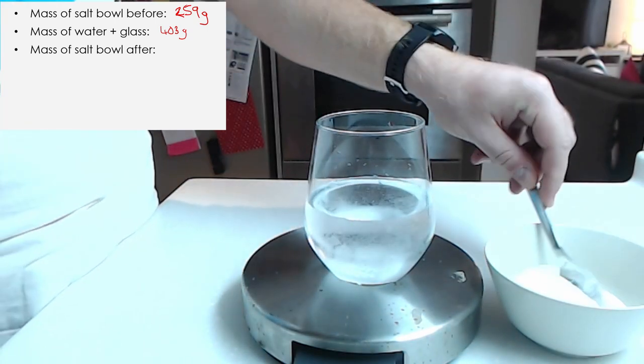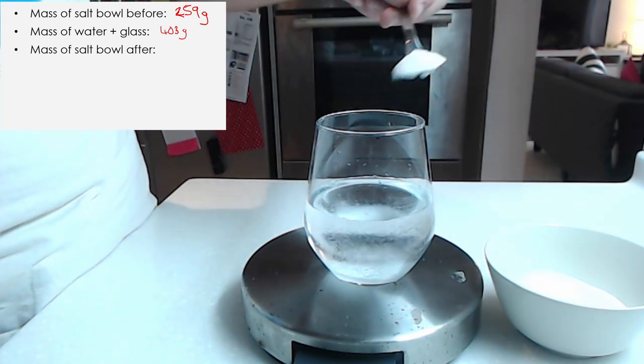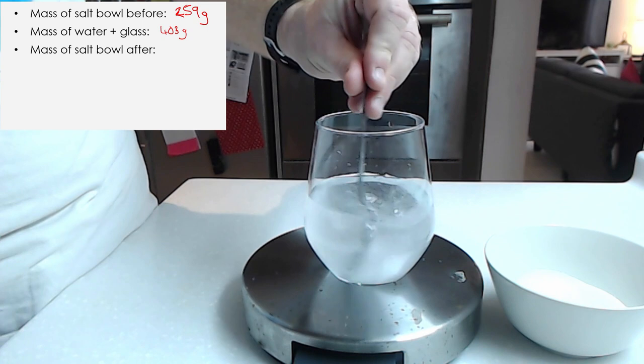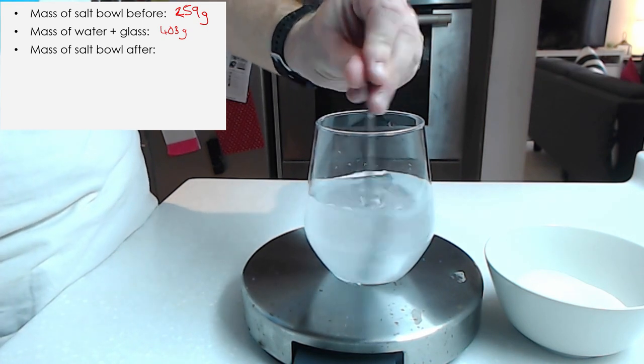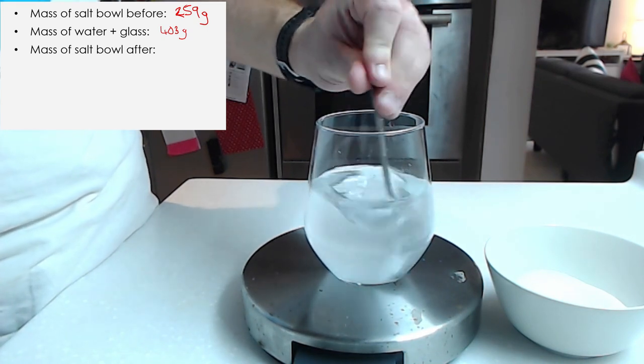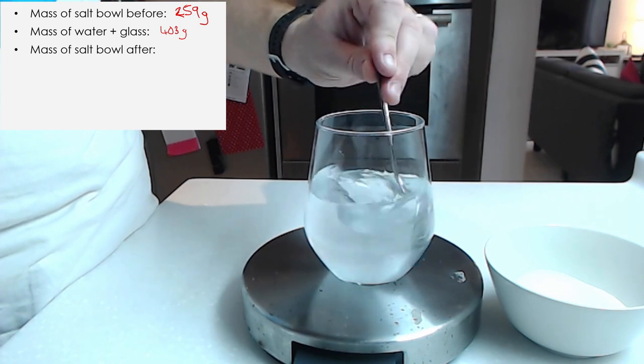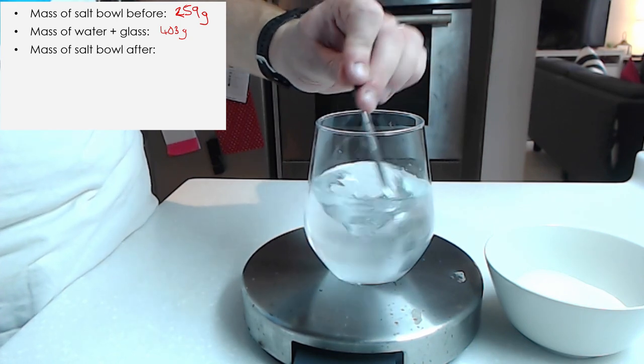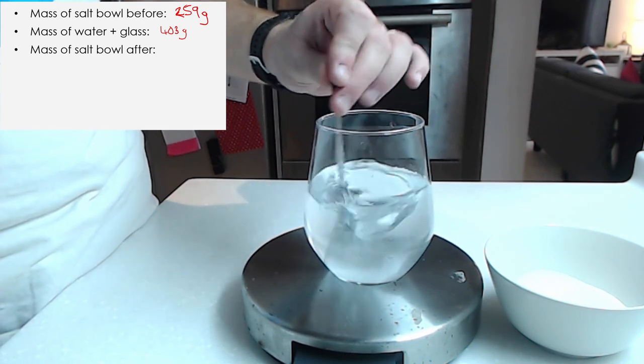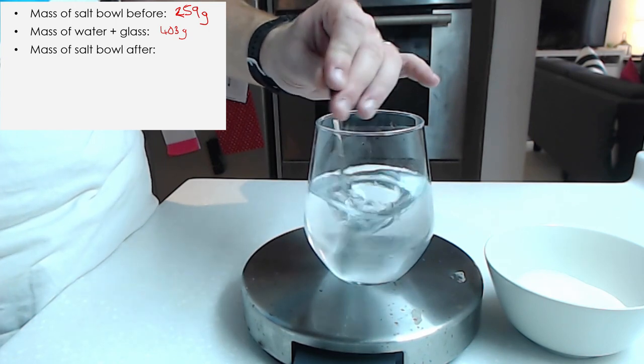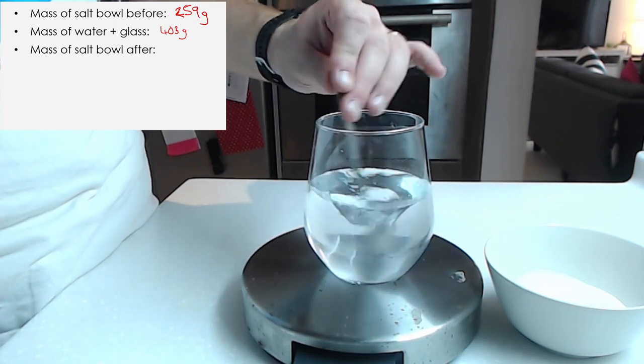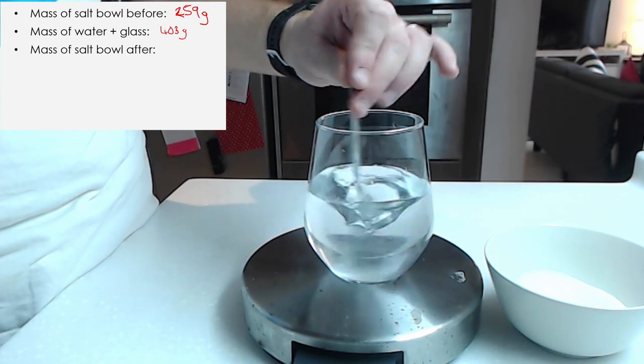So now what I'm going to do is add some sugar to my water. So in we go. There's one spoon. And let's try and get a decent result. So I'll put two big spoons in and give it a stir. If you're doing this at home, keep stirring until you can't see the sugar anymore. Or the salt if you're using salt. It will work just as well with either.